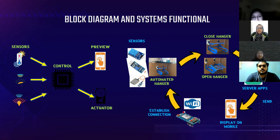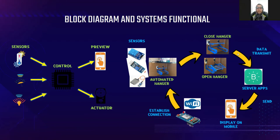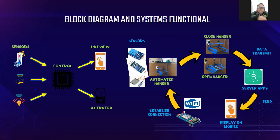After the microcontroller processes all the inputs, it sends the output signal to the servo motor. When the output is received, it converts the signal into mechanical energy, and our automatic clothes hanger will be in one of two conditions — either open outside or closed inside — based on input from the sensors. All data will be transmitted to the server so that all information can be displayed on the mobile phone. Our group uses Blynk as the intermediary between the microcontroller and the mobile phone.